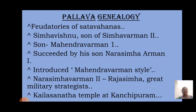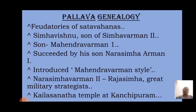Mahendravarman I ruled from about 600 to 638 AD — approximately 38 years — and contributed greatly to the Pallava kingdom. He was a follower of Jainism in the early parts of his rule, but later embraced Saivism through the Saivite saint Appar, also known as Thirunavukkarasar. He was a great patron of art and architecture, known for introducing a new style to Dravidian architecture referred to as the Mahendra style.